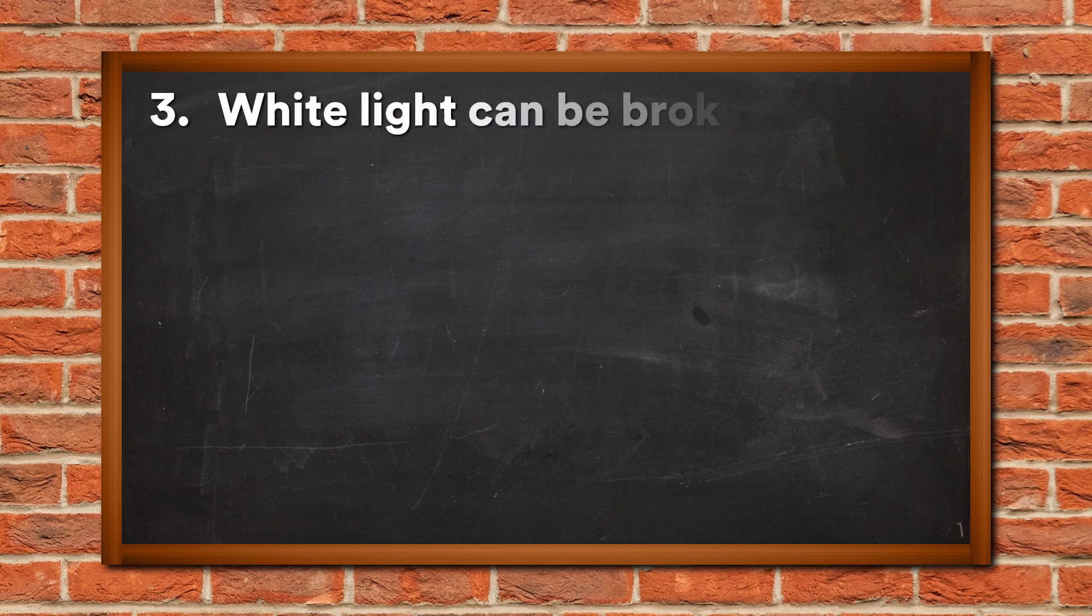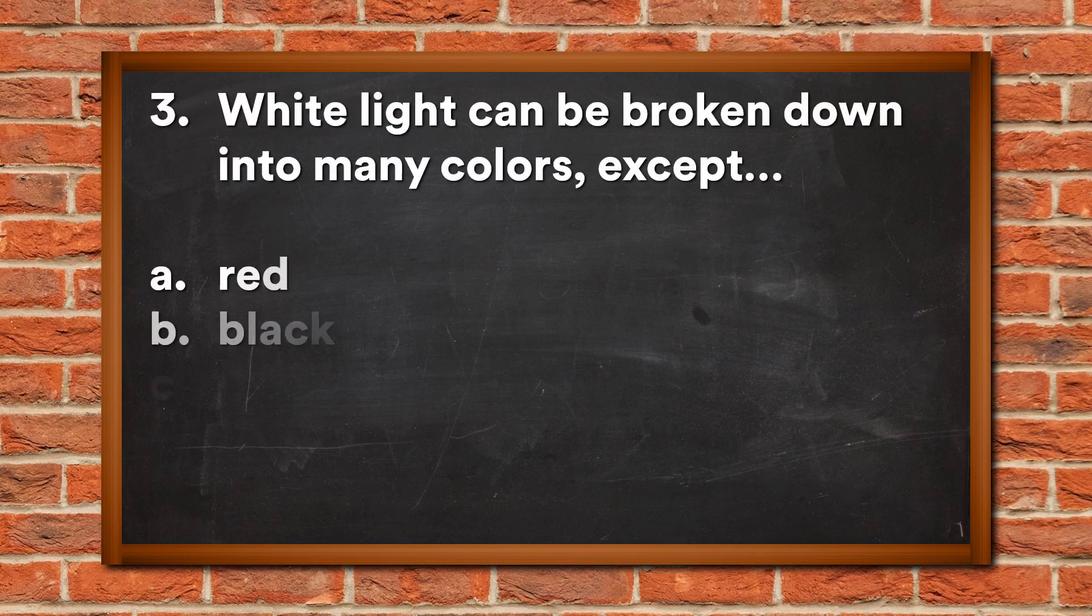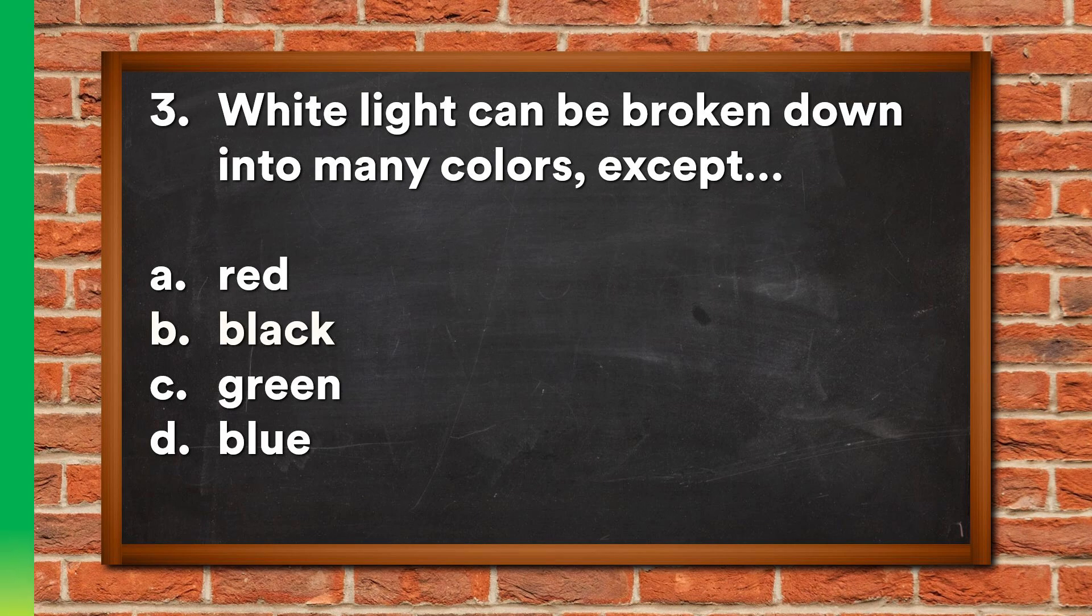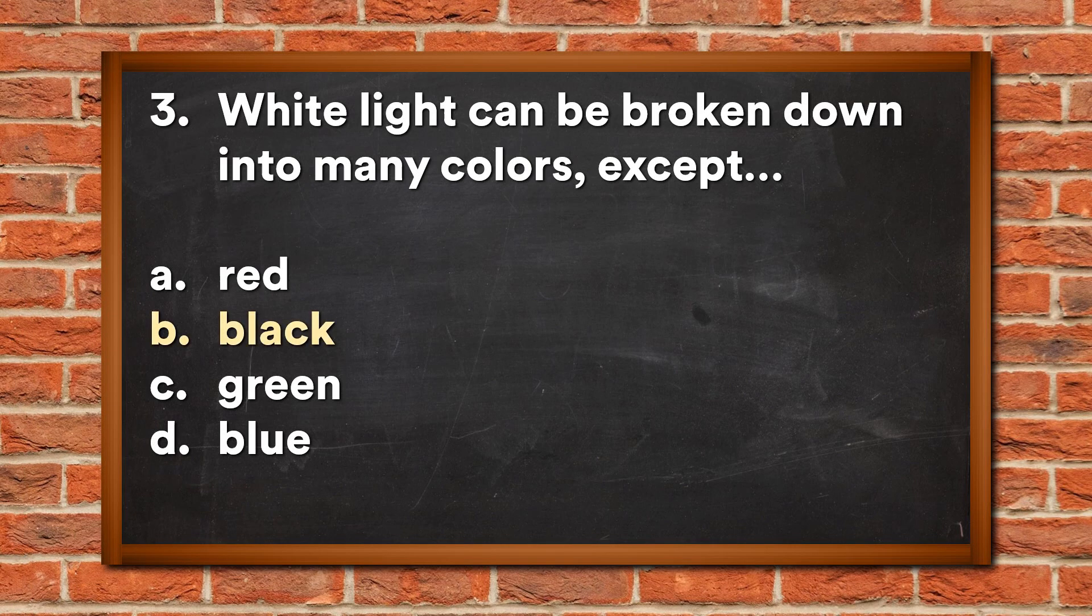Question 3: White light can be broken down into many colors except: A. Red, B. Black, C. Green, D. Blue. The answer is B, Black.